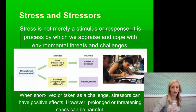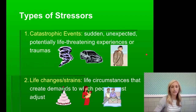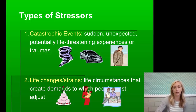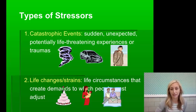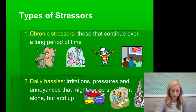We've talked about that with Yerkes-Dobson's Law. However, prolonged or threatening stress can be harmful. There are several types of stressors. A catastrophic event is a sudden, unexpected, potentially life-threatening experience or trauma — being sent off to war, being in a car accident, or experiencing a natural disaster. Life changes and strains are circumstances that create demands people have to adjust to, such as having a child, getting married, or moving.